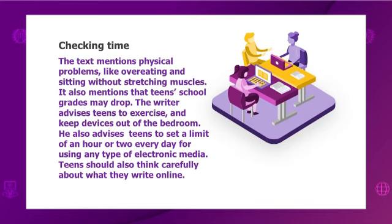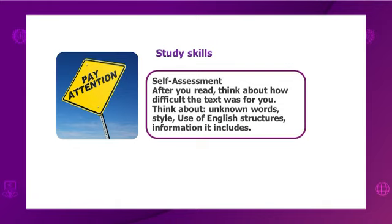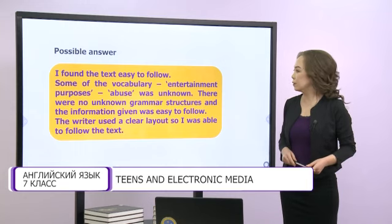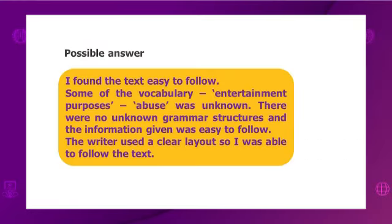Let's move on. Dear students, now pay attention please. Study skills – self-assessment. After you read, think about how difficult the text was for you. Think about unknown words, style, use of English structures, and the information it includes. Now look at a possible answer. I found the text easy to follow. Some of the vocabulary – entertainment purposes, abuse – was unknown. There were no unknown grammar structures and the information given was easy to follow. The writer used a clear layout so I was able to follow the text. You can give your own answer if you like.